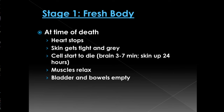During the fresh stage, at the time of death the heart stops, the skin becomes tight and gray in appearance, and the cells start to die. Your whole body doesn't die all at once — cells die one by one, starting with brain cells in about three to seven minutes, then skin cells taking up to about 24 hours. The muscles start to relax, and the bladder and bowels will empty from the body.